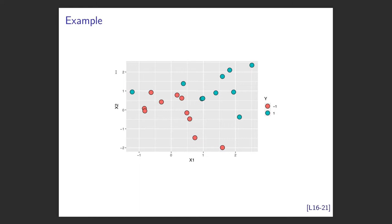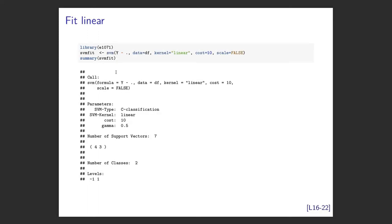Here's some simulated data with two predictors x1 and x2, and two classes: red points (class minus 1) and blue points (class 1). To fit SVMs in R, use the e1071 library — the command is svm(). It takes formula notation: y tilde dot for y and all other variables in the data frame. You specify the kernel type — starting with linear — set scale = FALSE, and set cost = 10, which allows quite a lot of violations.